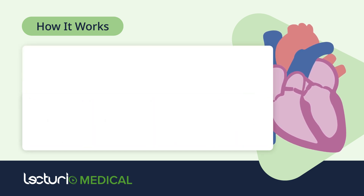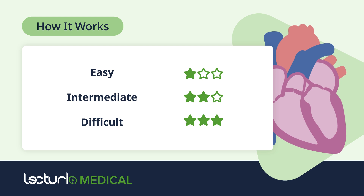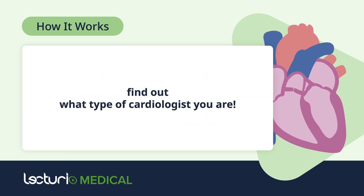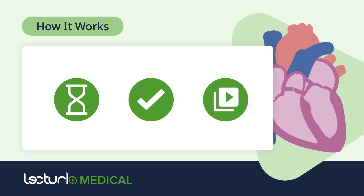Each round has three questions — one easy, one intermediate, and one difficult. For every easy question, you'll earn one star. Intermediate questions are worth two stars, and the difficult ones will get you three stars. Keep track of your score, and at the end, find out what type of cardiologist you are. You'll have a moment to think, then we'll reveal the correct answer along with a clear explanation from Lecturio's expert-led cardiology lectures. Let's dive in.